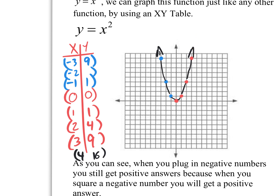You could have plugged in 5 — 5 squared is 25. 6 squared is 36. 10 squared is 100 — way off the graph. So obviously I stopped here because it's on the 10 by 10 graph. That's good enough.